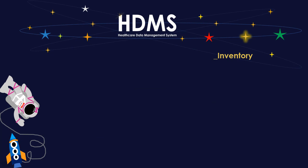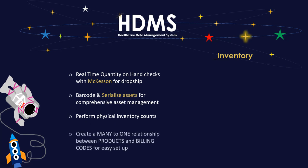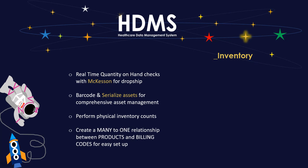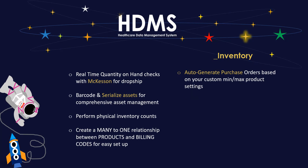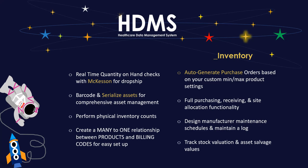Let's take a look at inventory. In our universe, you can check real-time quantity on hand with McKesson for reliable dropshipping. You can barcode and serialize assets for comprehensive asset management. You can perform physical inventory counts at any time and create a many-to-one relationship between products and billing codes for easy setup and product management. Auto-generate purchase orders based on your custom min and max product settings. HDMS offers full purchasing, receiving, and site allocation functionality. You can also design manufacturer maintenance schedules, maintain a log, and track stock valuation and asset salvage values.